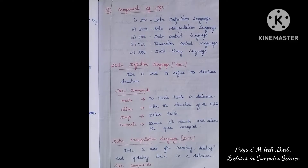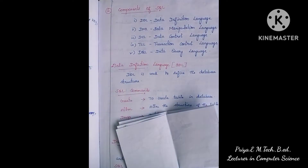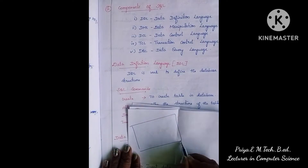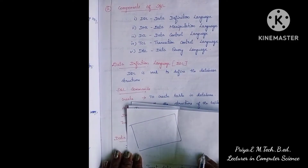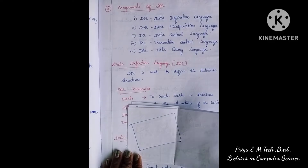Hi students, in video number 12 - standard computer science chapter 12 - Structured Query Language, that means SQL. SQL is a structured query language used for databases. We can see student data: admission number, role number, name, subject, marks, address, phone numbers — all of this is nothing but data.